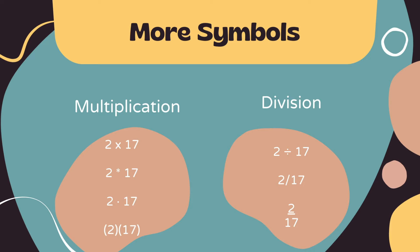For multiplication you might see two times 17 with the X, with the asterisk which looks kind of like a star, with the middle dot, or with just parentheses. For division, you can see it three ways: with the division sign you probably learned in elementary school, with a slash, or written as a fraction. Make sure you're familiar with all the different symbols that imply a certain operation.